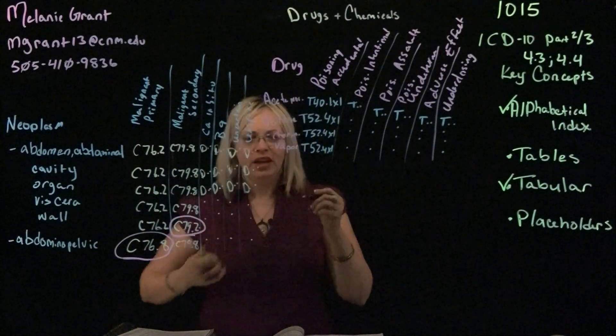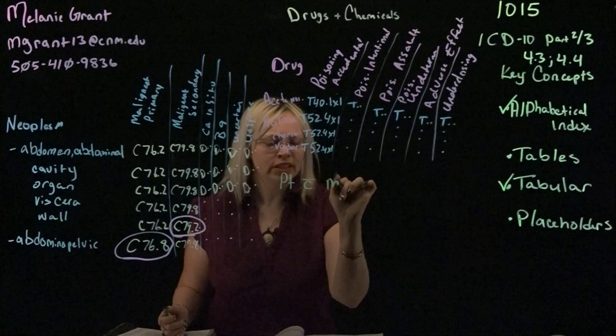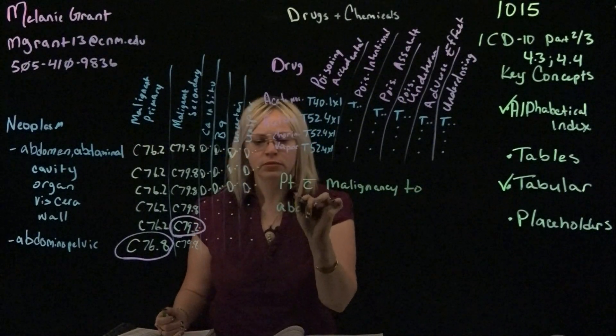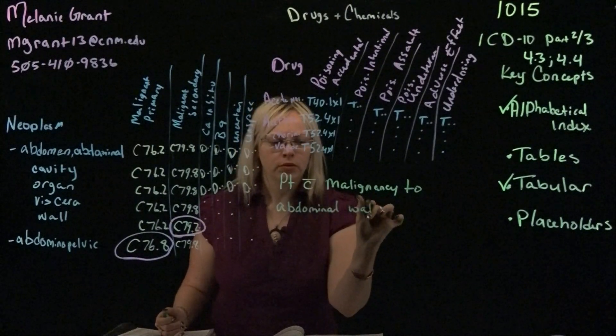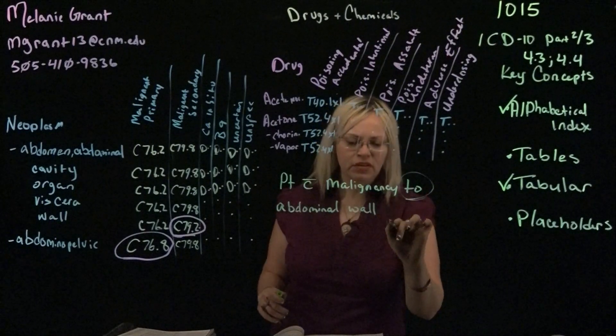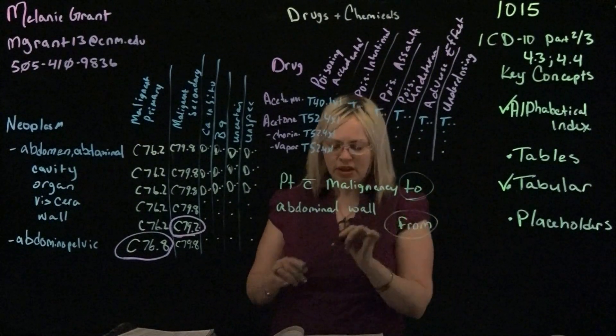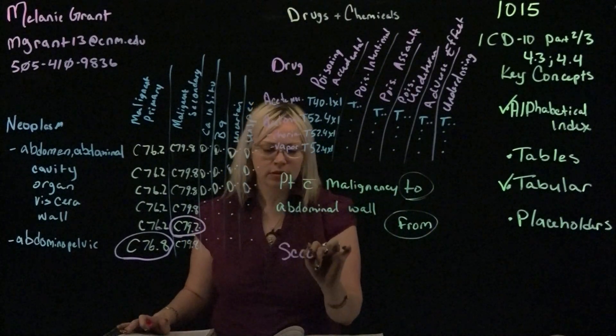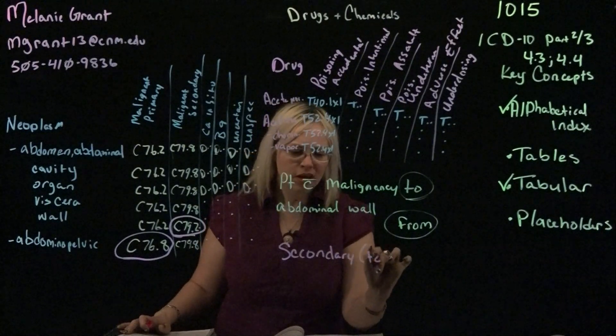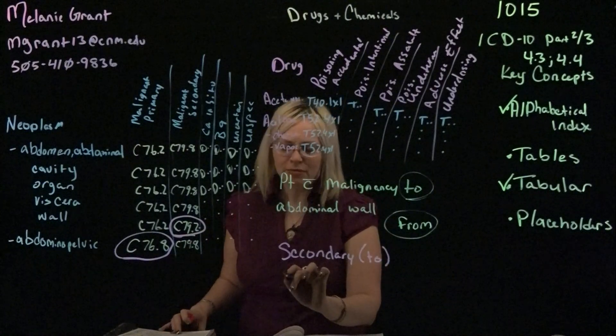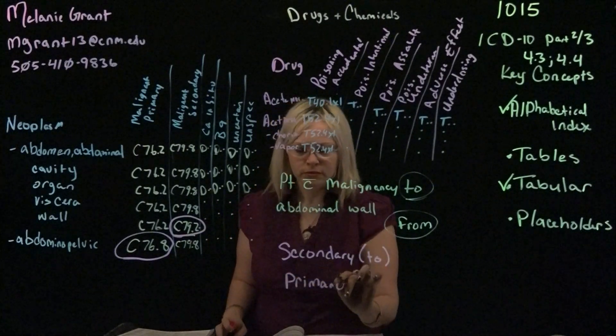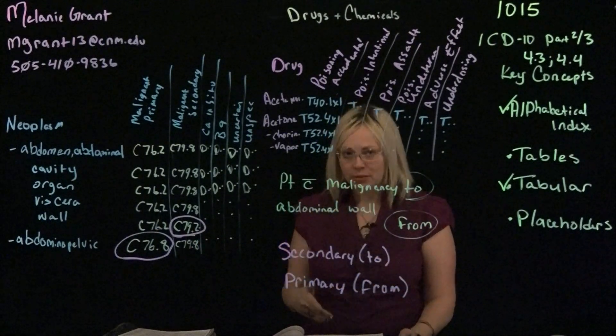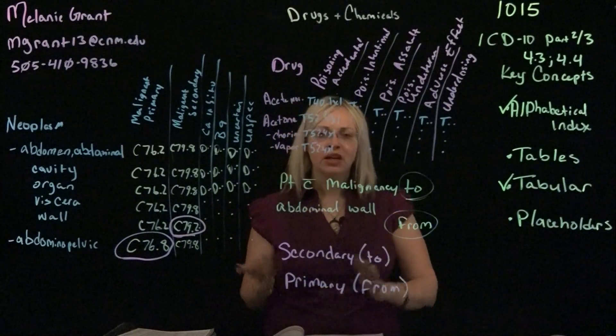So let's take an example. Let's say I have a patient with malignancy to the abdominal wall. This is another term that you want to be familiar with, the difference between to and from. If I have a malignancy that is to something, then that malignancy, where it's going to, is the secondary. If I have a malignancy that is from somewhere, then that malignancy is the primary. And if I don't specify where it's from, I only have the two, then there's also a code for unspecified location for that primary. So if you ever have a secondary, there should always be a primary, even if we don't know where it came from.